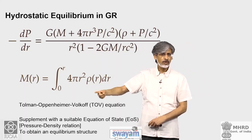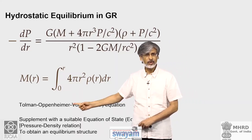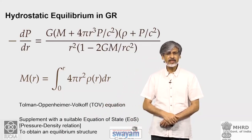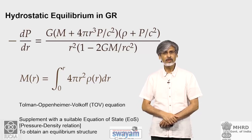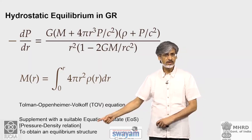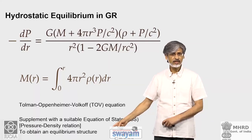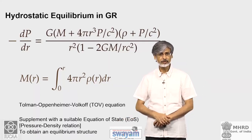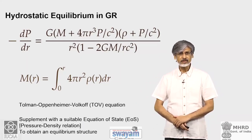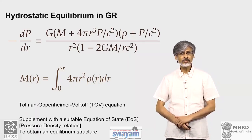This system of equations goes by the name Tolman-Oppenheimer-Volkoff (TOV) equation. The TOV equation, supplemented by a suitable equation of state — in this case the degenerate electron equation of state relating pressure and density — gives us the equilibrium structure in general relativity. Let us see what kind of correction general relativity causes to the mass-radius relation of white dwarfs.